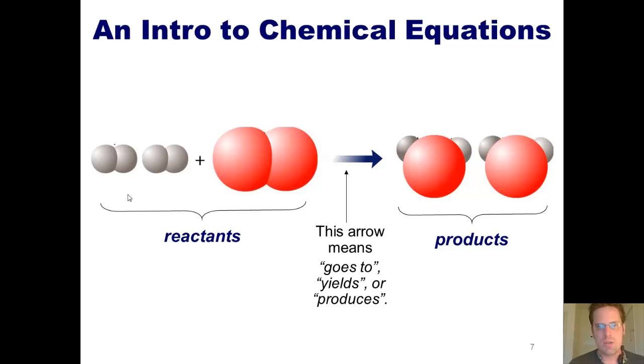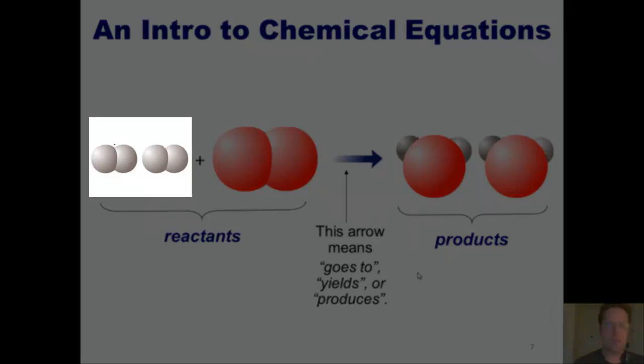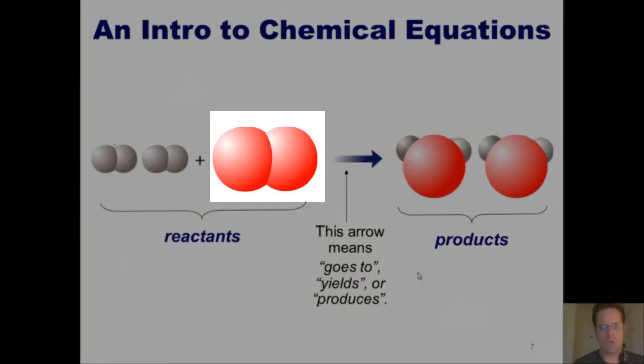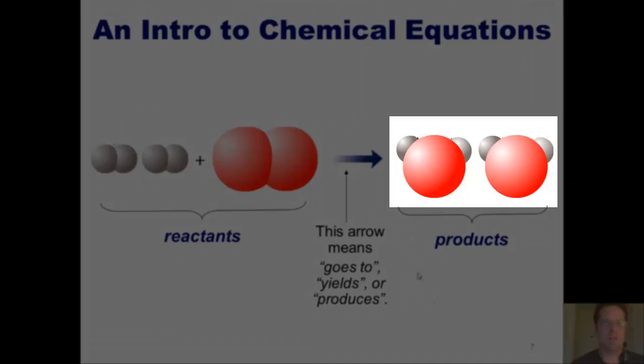So as I mentioned already, the participants in this chemical reaction that are on the left side of the equation are called reactants, and the things that they make, which are shown on the right side of the equation, are products. This arrow that joins the left side to the right side is often read by chemists as saying goes to, yields, or produces. Thus, if you were actually reading this, just like you would read a sentence on a page, you would say, two molecules of H2 and one molecule of O2 yield two molecules of H2O.